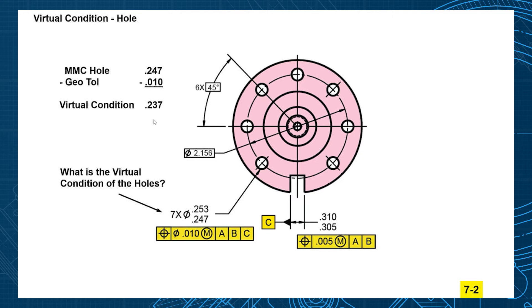So let me animate that so you can see that better. These red dots represent the virtual condition on that true position. Fixed boundary of 237. Now the holes are bigger. See the holes are 247 to 253.